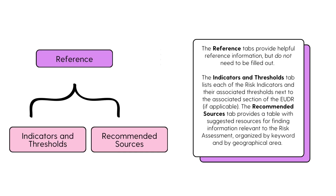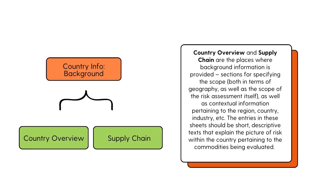First, the reference tabs. The reference tabs provide helpful reference information but do not need to be filled out. The Indicators and Thresholds tab lists each of the risk indicators and their associated risk thresholds. If applicable, the EUDR location is also noted. The Recommended Sources tab provides a table with suggested resources for finding information relevant to filling out the risk assessment, organized by keyword and by geographical area.